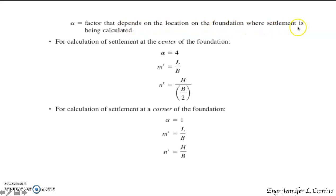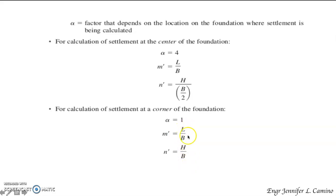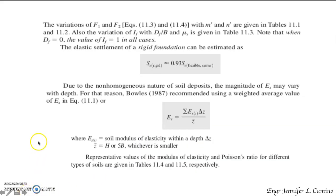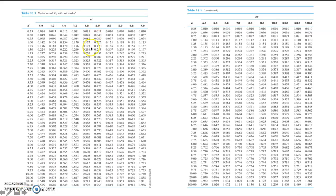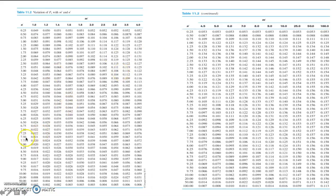Alpha is a factor that depends on the location of the foundation where settlement is being calculated. For settlement at the center of the foundation, alpha equals 4, and m′ and n′ are given by the corresponding expressions. For settlement at the corner of the foundation, alpha equals 1, with different expressions for m′ and n′. The values of F1 and F2 are obtained from Tables 11.1 and 11.2 using m′ and n′.